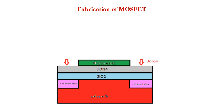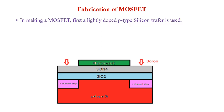The first step in making the MOSFET is taking a lightly doped p-type silicon wafer. Here you can see the red color — this red one is nothing but a lightly doped p-type silicon wafer.